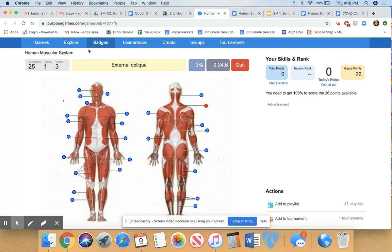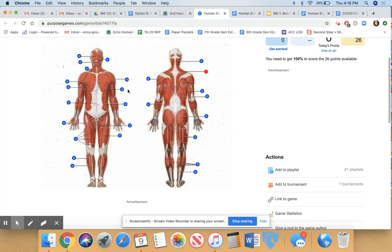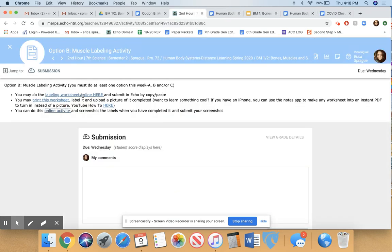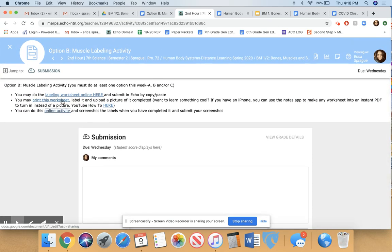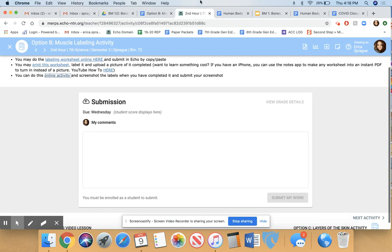So anyway, this one goes through the muscles that are pretty much the main muscle groups that we would need to know for a junior high class. So I'm going to go ahead and change this link. You can submit online. If you decide to do a printed worksheet and you want to label things, you can upload a picture. You can do the online activity and screenshot.